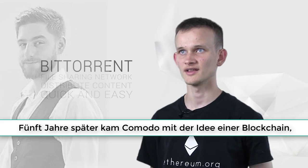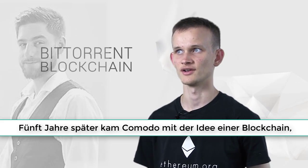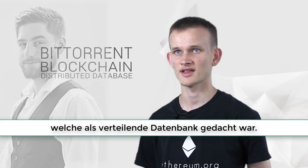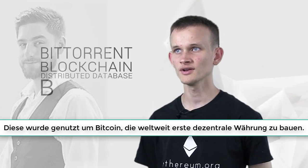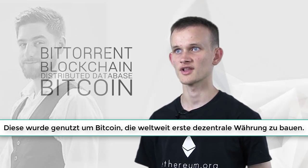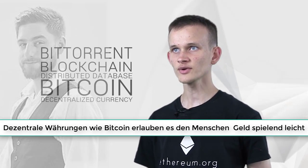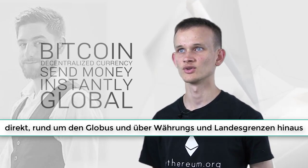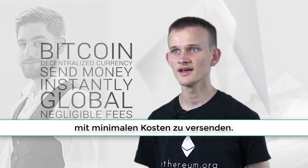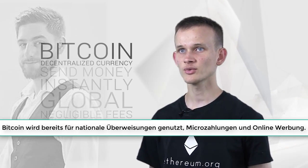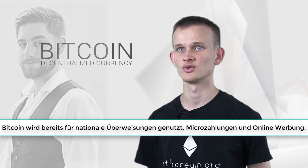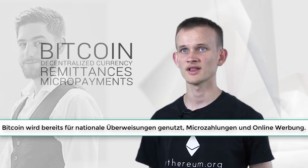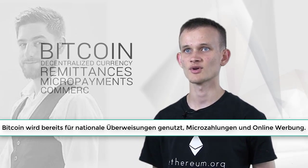Five years later, Satoshi Nakamoto came up with the idea of a blockchain, a sort of distributed database, and used it to build Bitcoin, the world's first decentralized currency. Decentralized currencies like Bitcoin allow people to send money instantly anywhere around the world with no regard for national borders, with negligible fees. Bitcoin is increasingly being used for international remittances, micropayments, and commerce online.